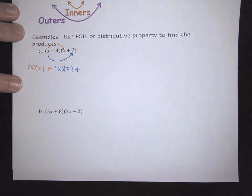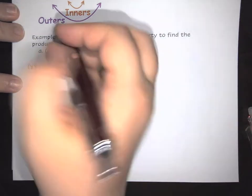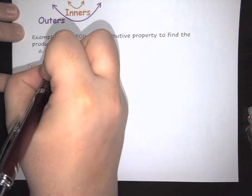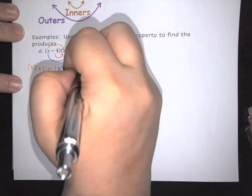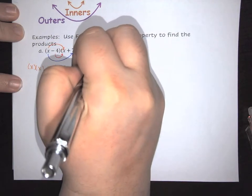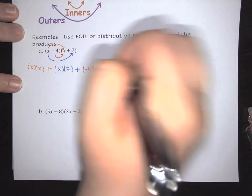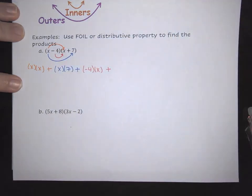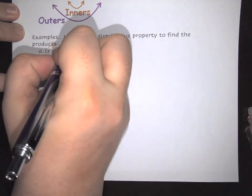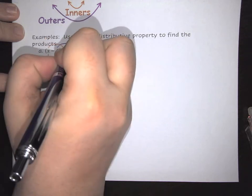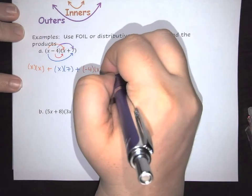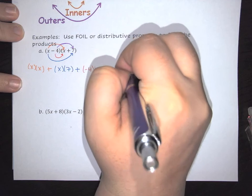We're going to add it to your innermost terms. So those are these right here. This is going to be negative 4 times X. And we're going to add it to the last terms that we have. So this is going to be negative 4 times 7.